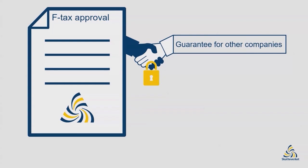Most Swedish construction companies therefore require their subcontractors to have F-tax approval. This is also important if you hire subcontractors. If you have F-tax approval you must state this on your invoices and estimates — 'godkänd för F-skatt' in Swedish. If you fail to do so, then your client is obliged to deduct preliminary tax from your payment, and if you're a sole trader the client also needs to pay social security contributions. F-tax approval also shows potential customers that you don't have any tax debts, which makes your company more credible.